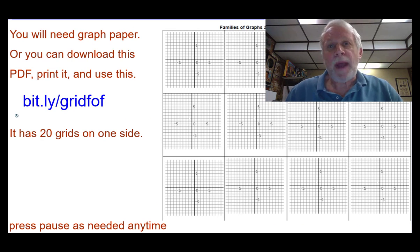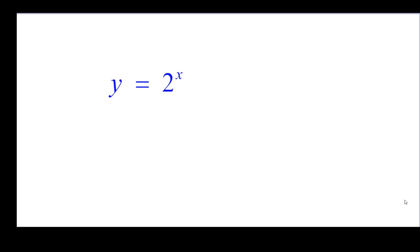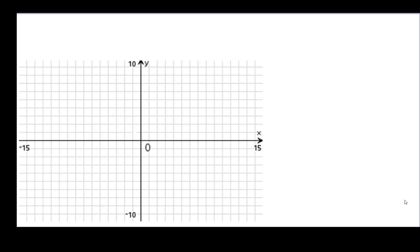If you don't have graph paper, you can download this PDF at this website, which can be printed with 20 grids on each side. y equals 2 to the x. So start with a grid.